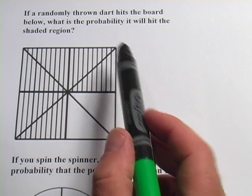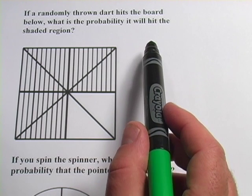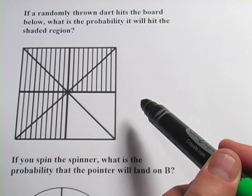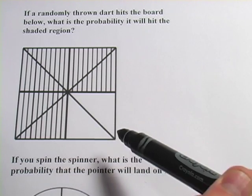In this problem here it says, if a randomly thrown dart hits the board below, what is the probability it will hit the shaded region? And then we've got this kind of weird looking dart board. And part of this is shaded and part of it's not shaded.